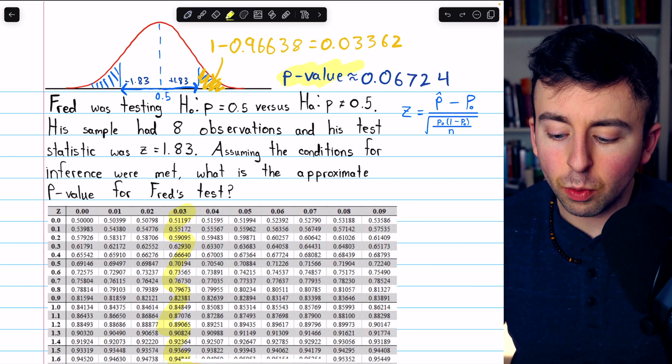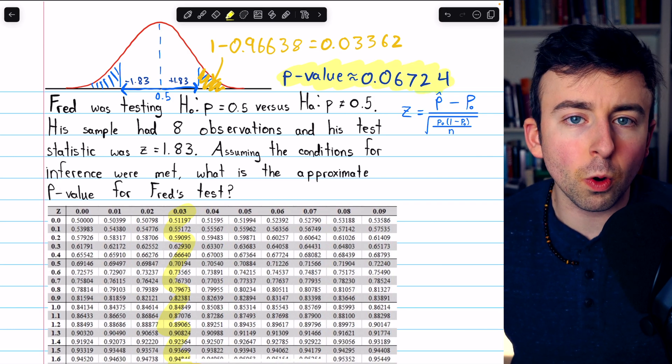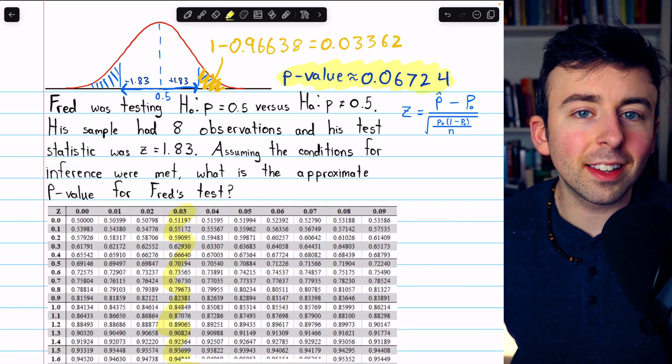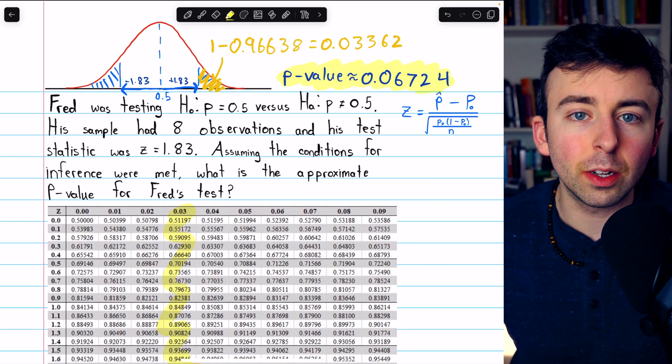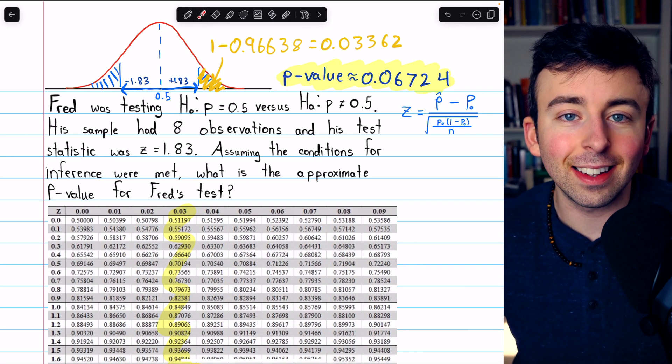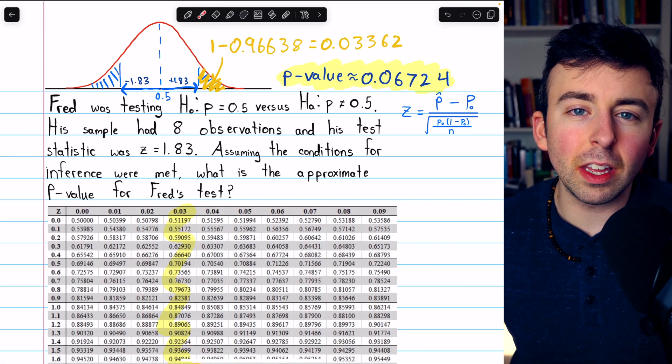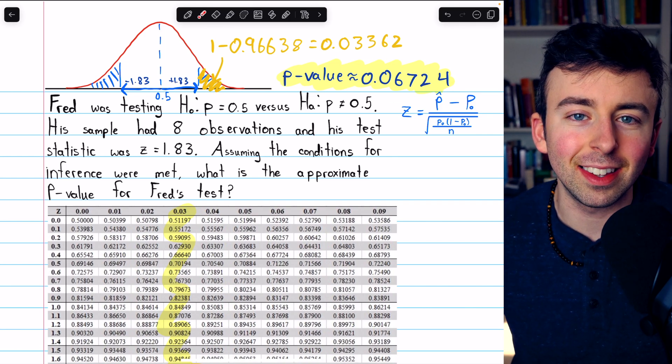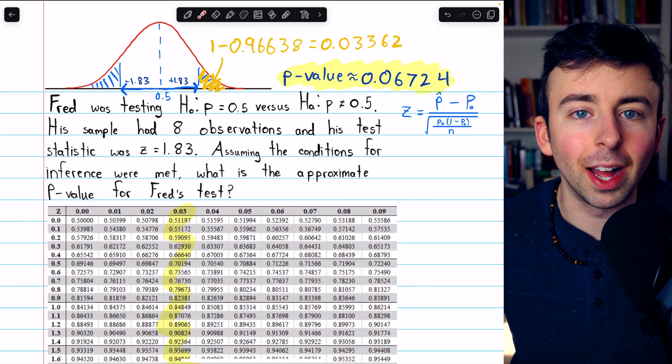Fred's conclusion for this test would probably be that there is not strong enough evidence to reject the null. If he was using a pretty weak significance level, like alpha equals 10%, then he would reject the null, because this is less than 10%, but usually 5% is a more common benchmark. So we might say there's not convincing evidence here to reject the null hypothesis.